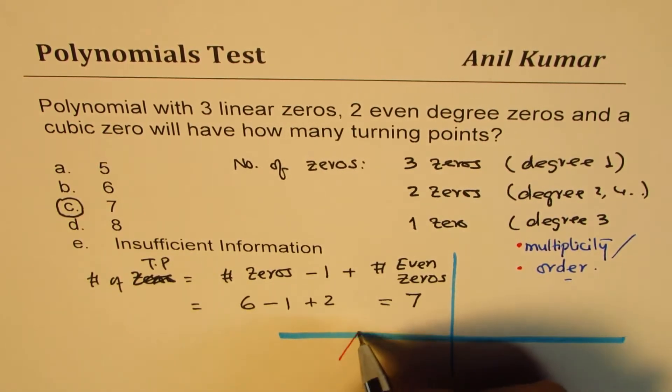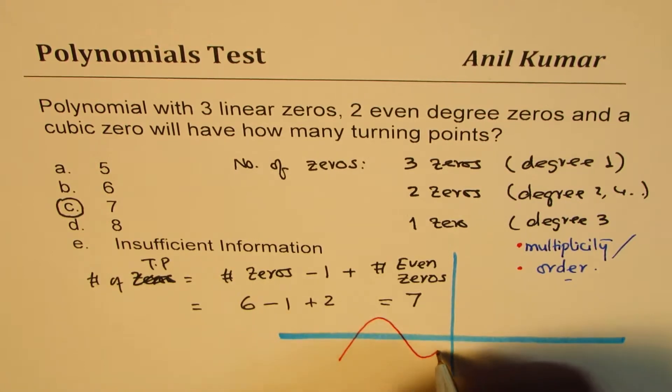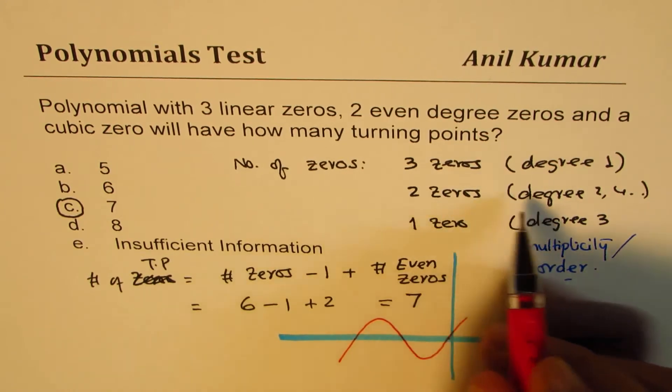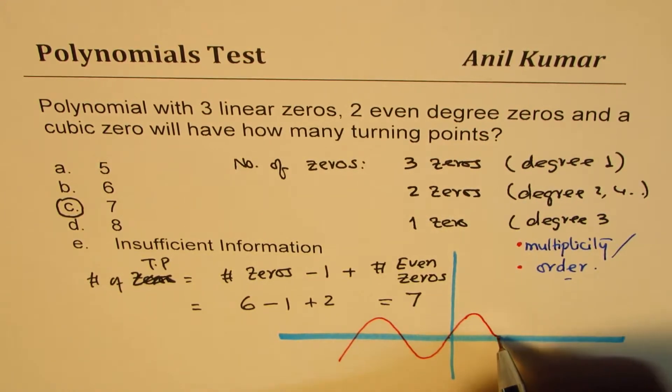Means that the function will kind of, one, two and three, so these three are degree one. It'll just cross. Now we got two of degree two or even, so it'll like kind of turn, bounce back. Do you see that bouncing back?